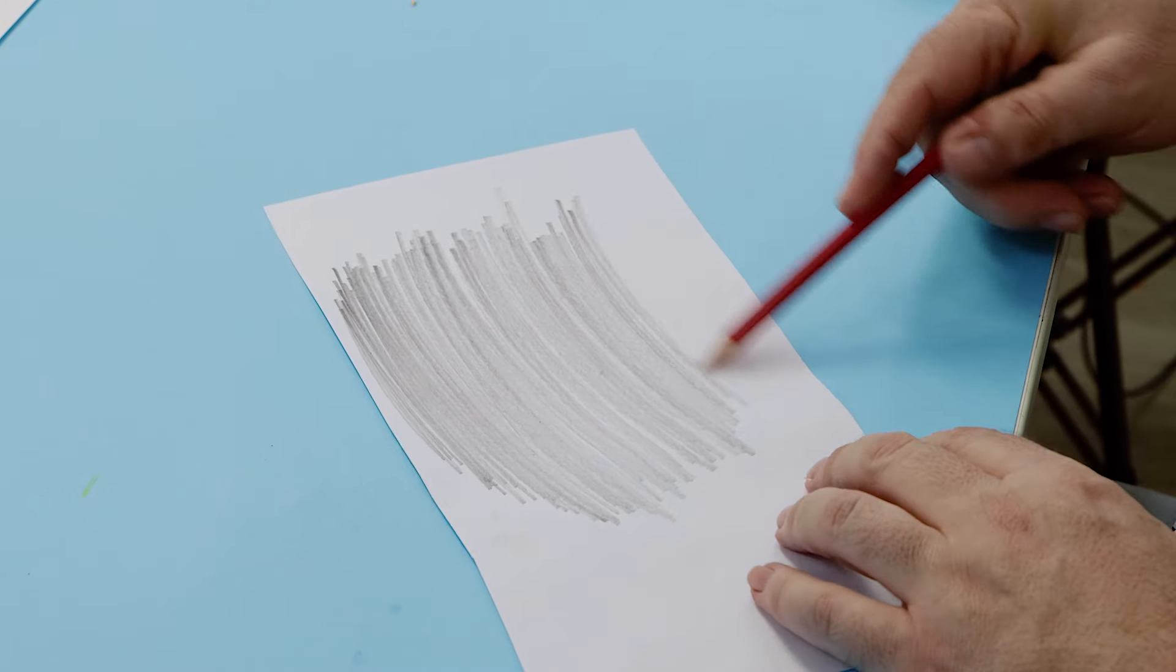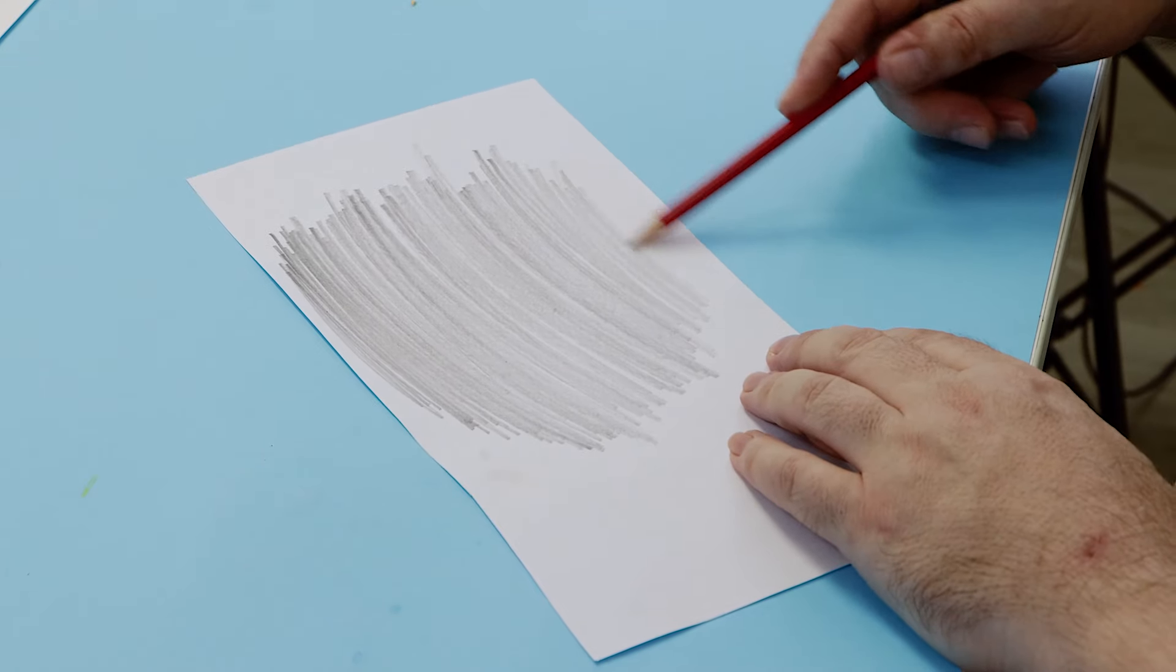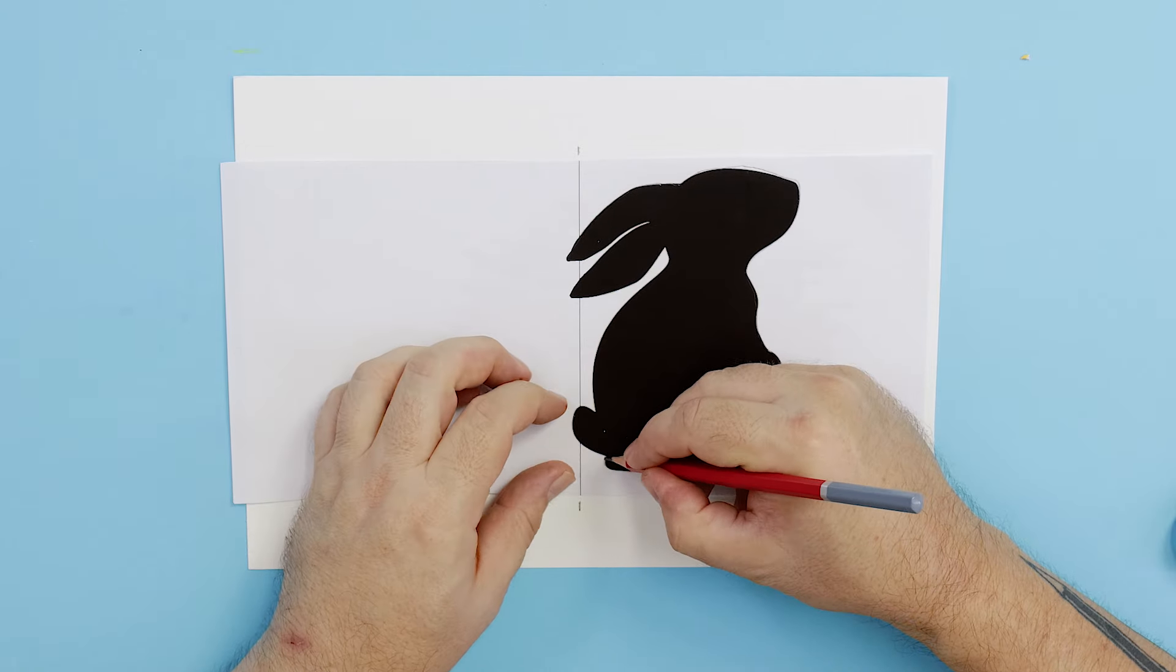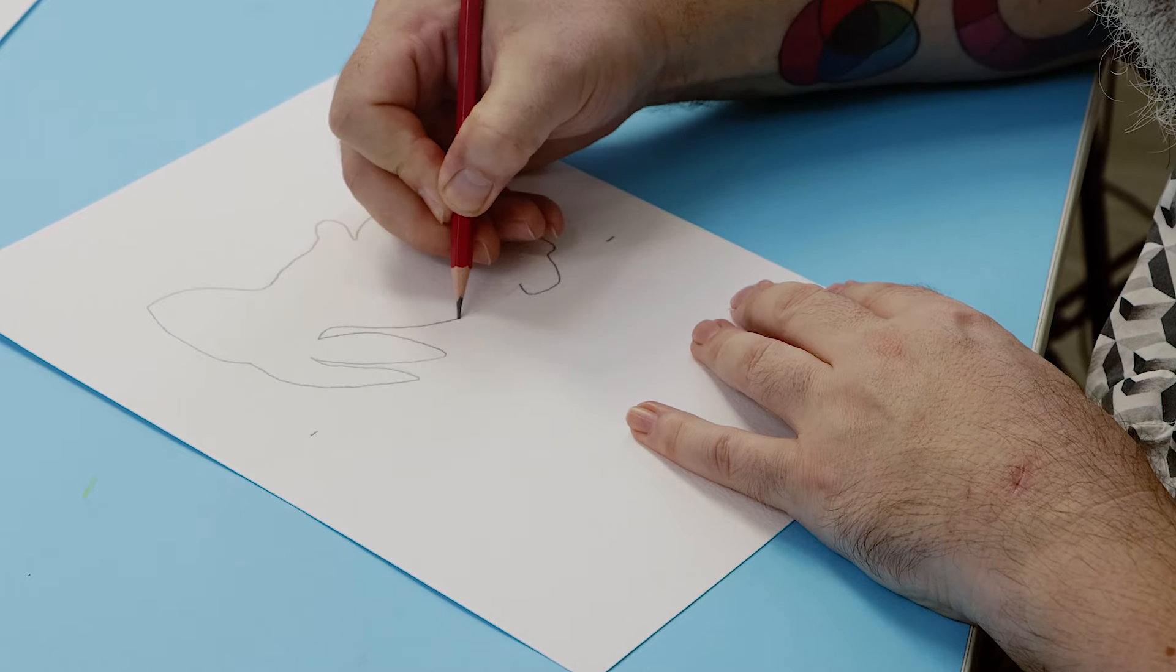Next we're going to make the bunny card. First cut the image off and follow the shading steps like in the previous egg card and transfer the shape with a pencil, then redraw in the shape so it is darker.